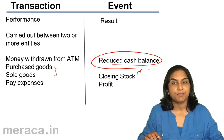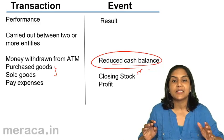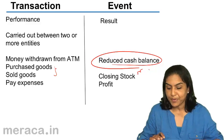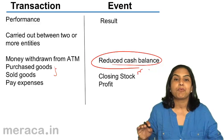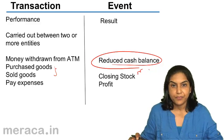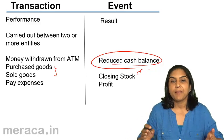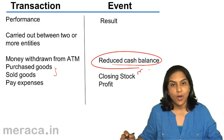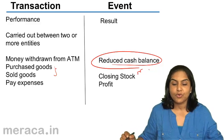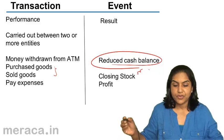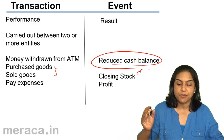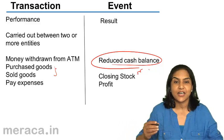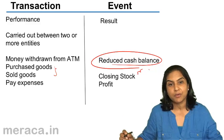Similarly, when we pay expenses, if I have to meet expenses, my profit is going to come down. If I make sales, my income may go up, and so on and so forth. So a transaction is the performance of an act, and an event is the result of such performance.